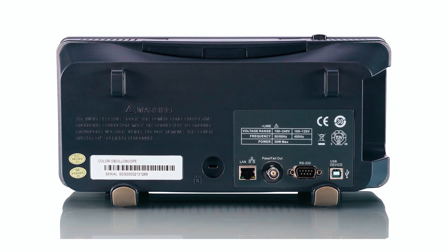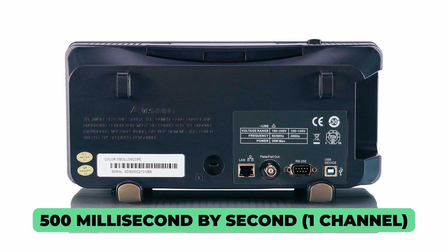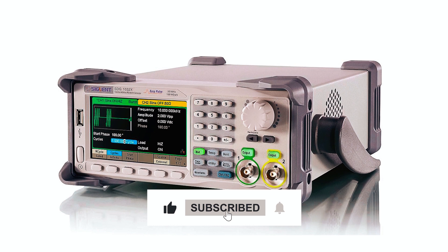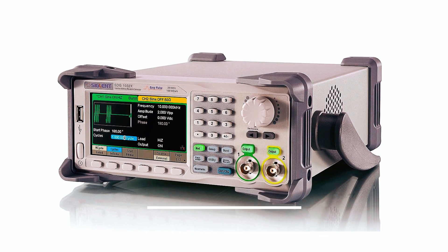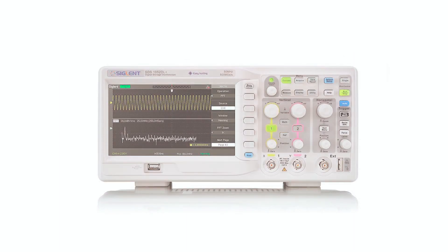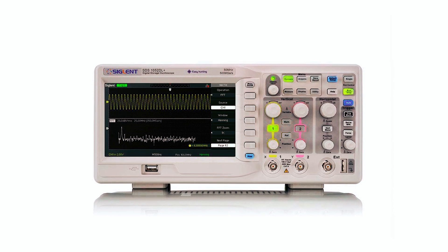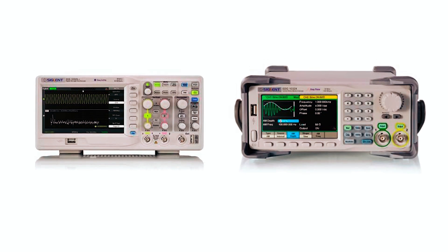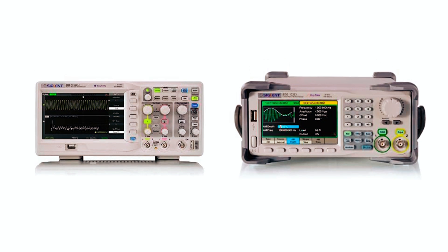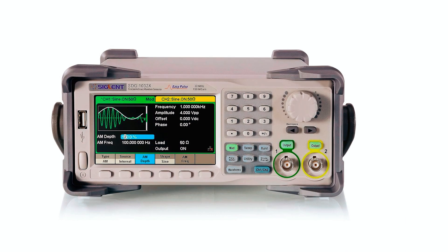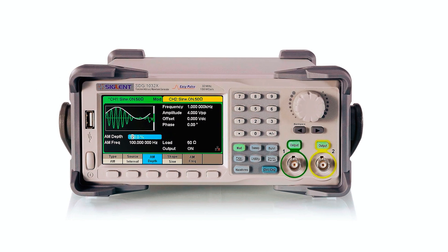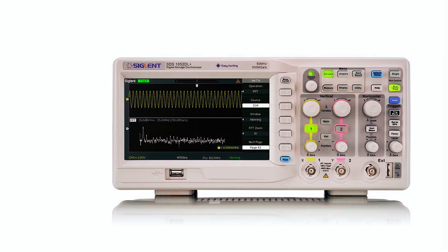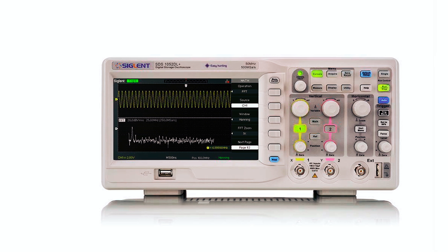Featuring a maximum real-time sample rate of 500 megasamples per second per channel and a record length of 32 kilopoints per channel, it allows users to capture detailed waveforms with precision. Advanced triggers enable the isolation of specific signals for accurate analysis and troubleshooting. Equipped with a higher resolution display, this oscilloscope offers enhanced clarity for waveform visualization. It includes essential features like cursors, math functions, a built-in frequency counter, and 32 types of auto measurements.